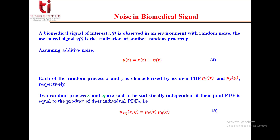The two random processes X and η — signal of interest and noise — are said to be statistically independent when their joint probability density function equals the product of their individual density functions: p(x, η) = p_X(x) · p_η(η).